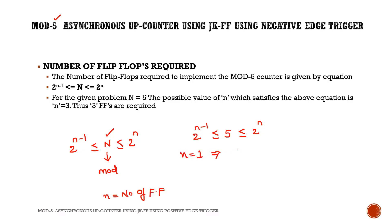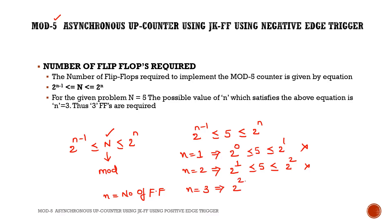Substituting n=1: 0 ≤ 5 ≤ 2 — not satisfied. Substituting n=2: 1 ≤ 5 ≤ 4 — not satisfied since 5 > 4. Substituting n=3: 4 ≤ 5 ≤ 8 — this is satisfied. So the number of flip-flops required is n=3. We need 3 flip-flops to design the mod 5 asynchronous up counter using JK flip-flops.